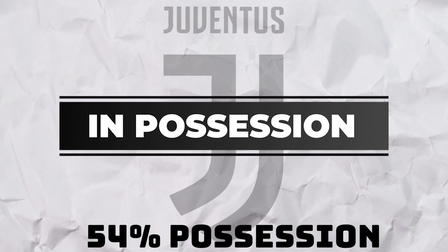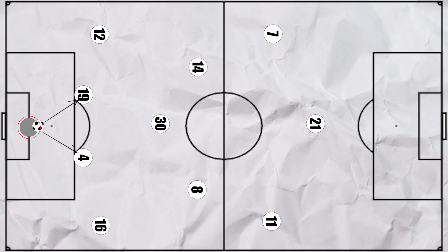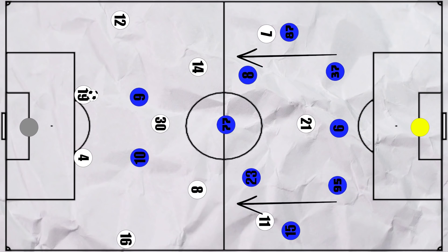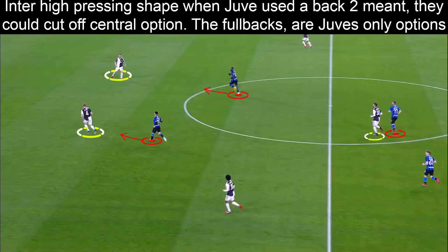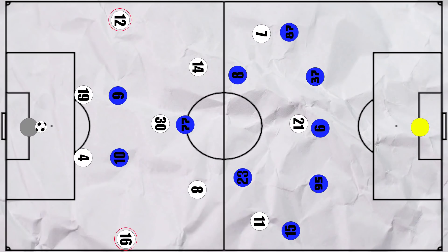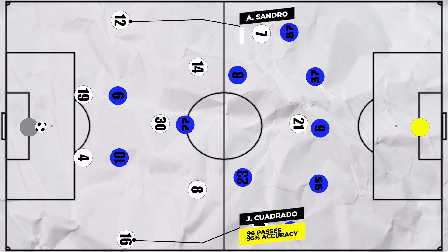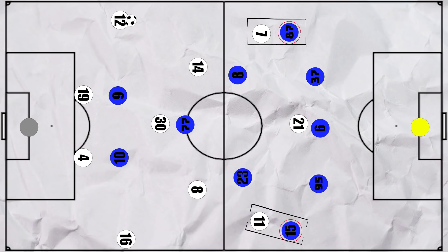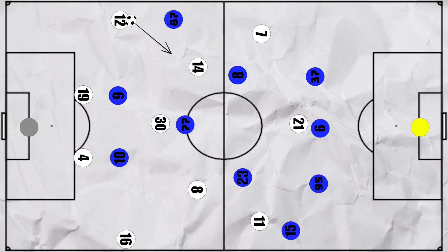Juventus had the majority of the ball, so let's start with how they look to play in possession. Like every Sarri team, they look to play out from the back starting with Szczesny. When he had the ball, Juve would build with two centre backs and the full backs pushed higher into the wide spaces. Inter on the other hand were looking to press high during this phase, with Lukaku and Martinez on each centre back, while Brozovic was high on Bentancur. With limited options, Szczesny would then look to play into the full backs. The importance of the Juventus full backs is shown by them completing the most passes for the team.